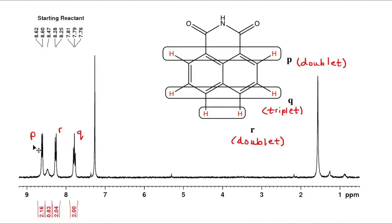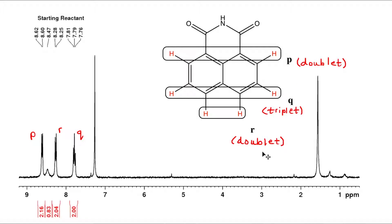I've assigned the signals to P, R, and Q protons. The signal that is a triplet corresponds to the Q protons, since it's the only triplet we would expect. P and R are both doublets, so to discern between the two, we look at the chemical environment of the P protons — they are closer to the imide functional group.